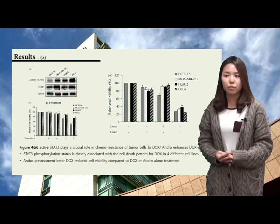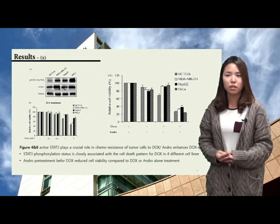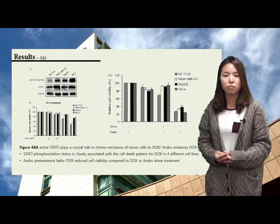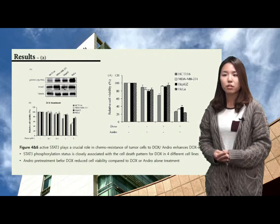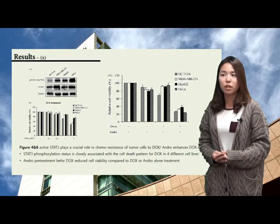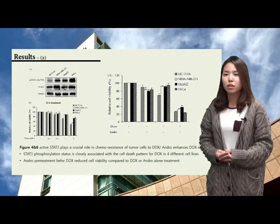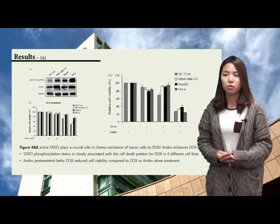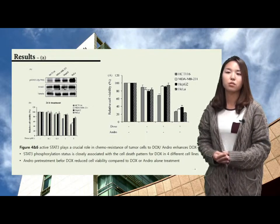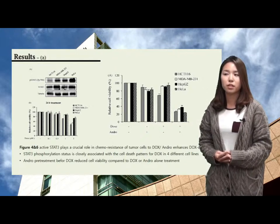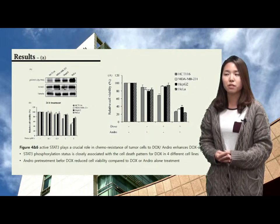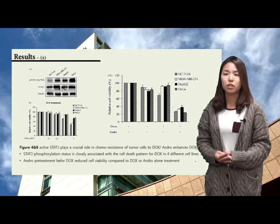The research team used 4 different types of cancer cells to see the effect of andro. Human colon cancer HCT-116, triple-negative human breast cancer MDA-MB-231, human hepatocytes HUH-7, and cervical cancer HeLa cells were used. The 4 cell lines basally express STAT3 and phospho-STAT3 and die when doxorubicin is treated.